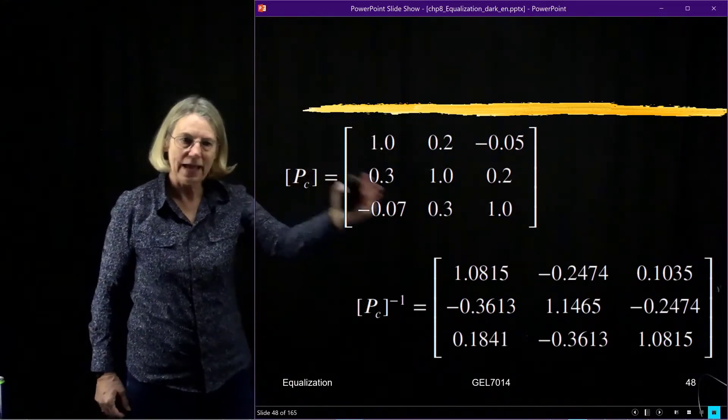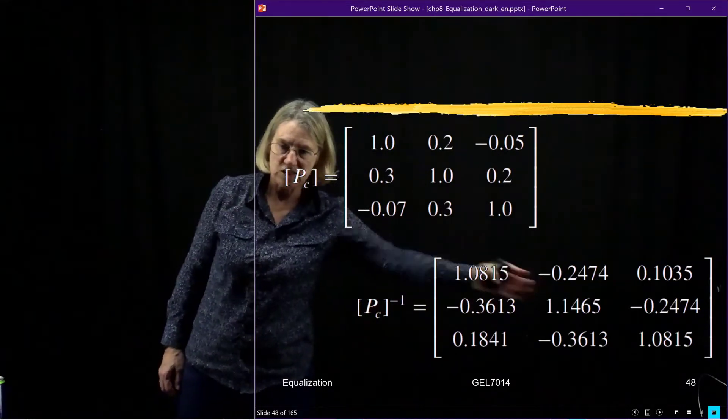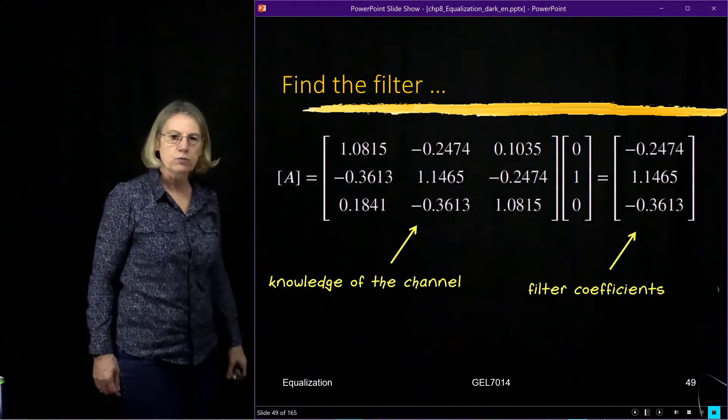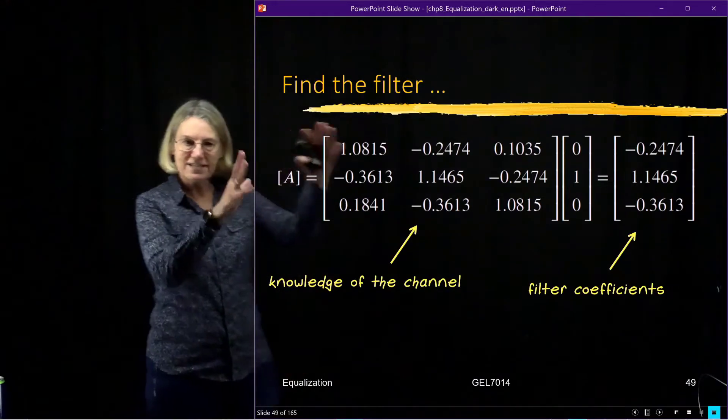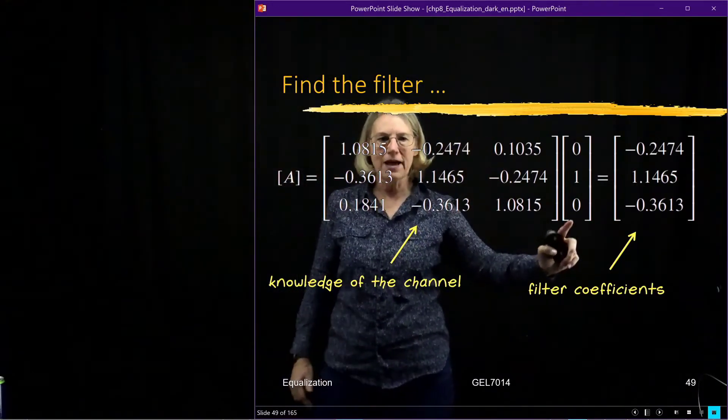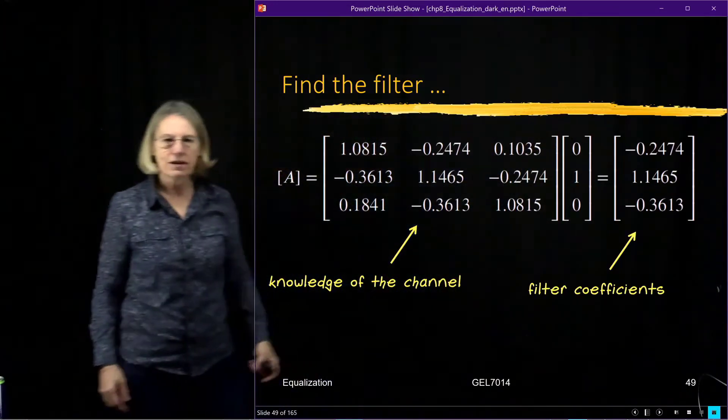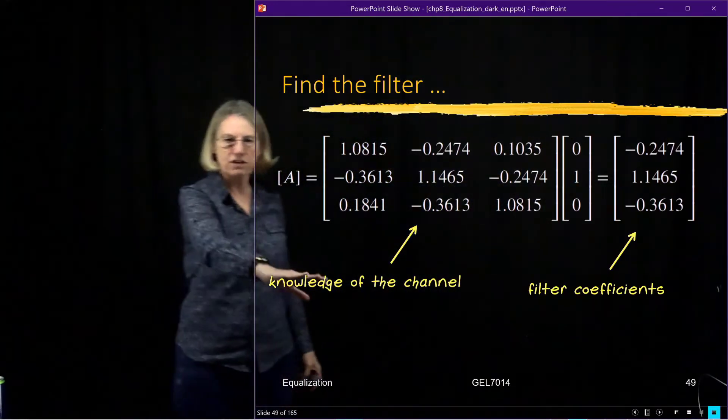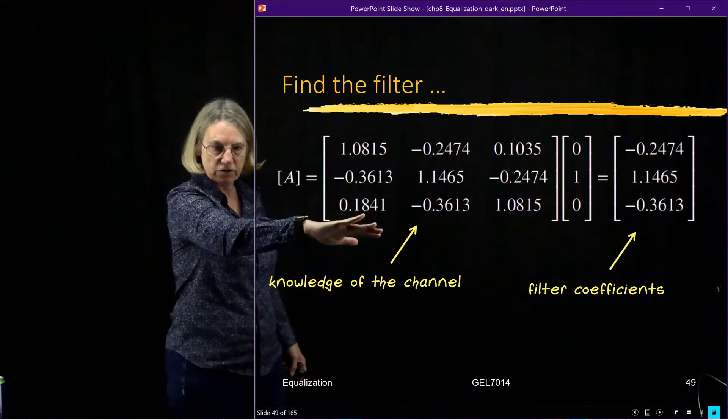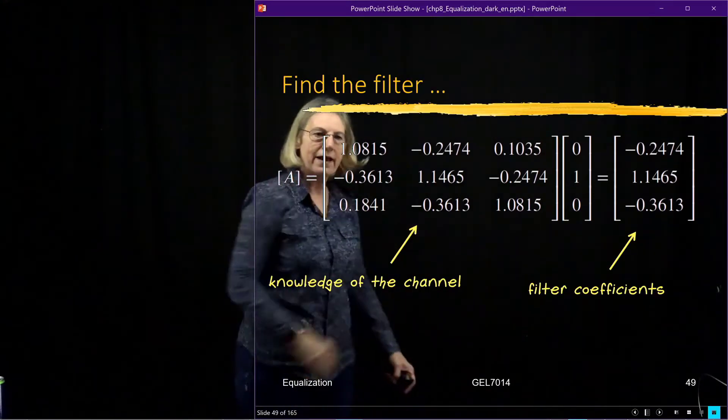So numerically we go to MATLAB, find the inverse, and we get this result. If you recall, when I look at this I'm going to take this matrix, I'm going to multiply by this delta function in a vector.